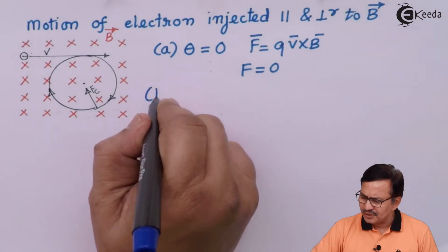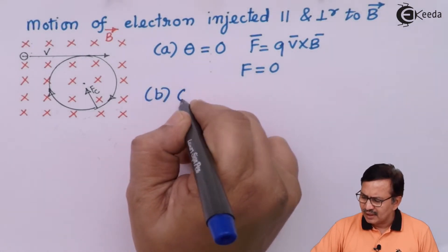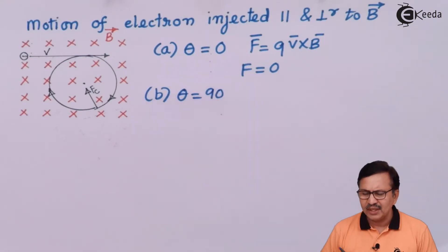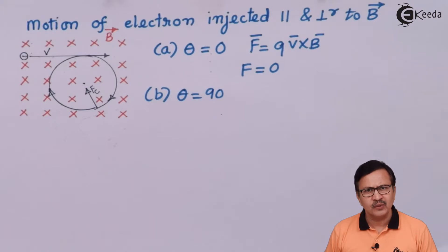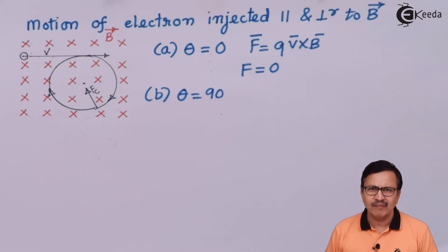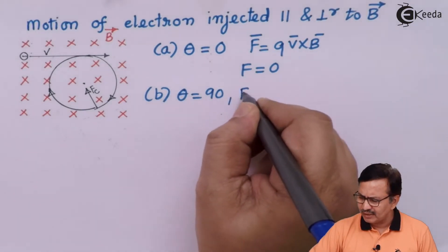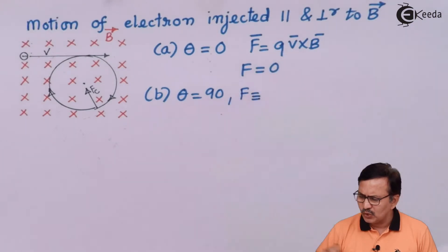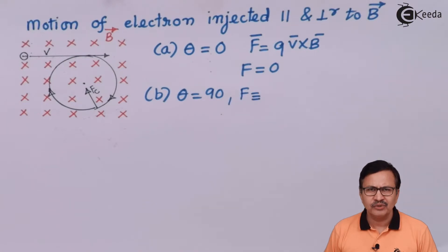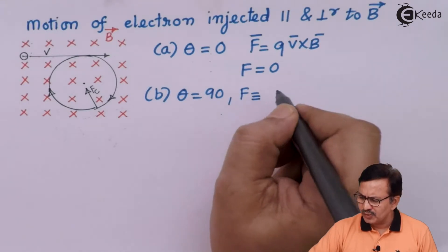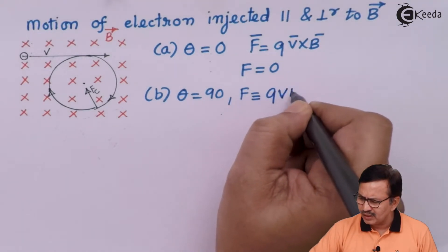Now let us consider Case B, where theta equals 90 degrees — the electron is injected in a direction perpendicular to the magnetic field. The resultant magnetic force is F = Q(V × B) = QVB sin(theta). Since sin(90) = 1, this simplifies to F = QVB.